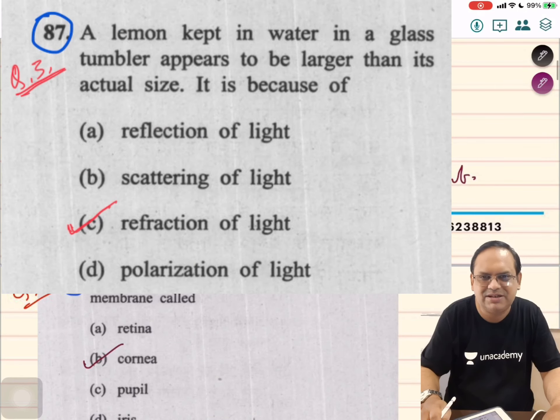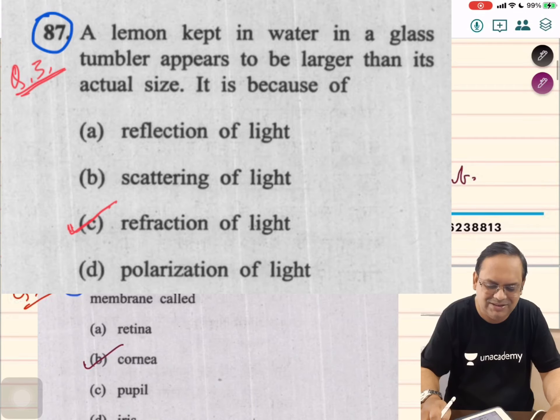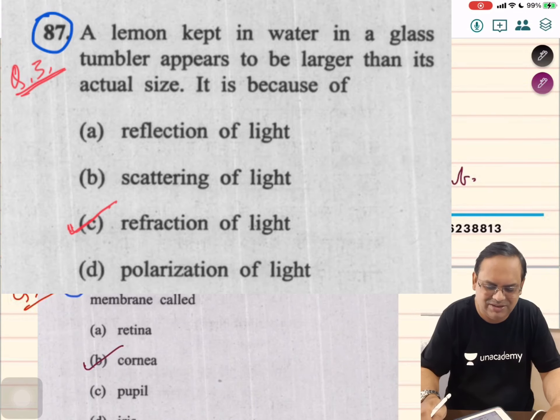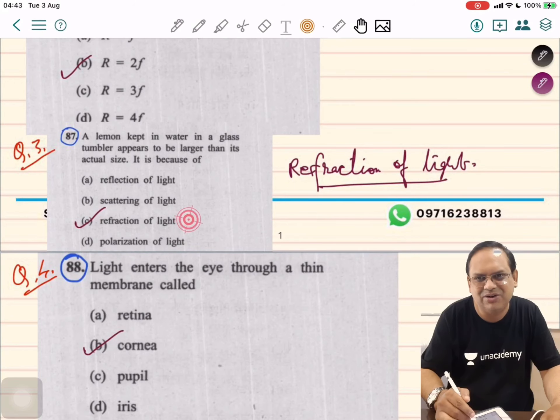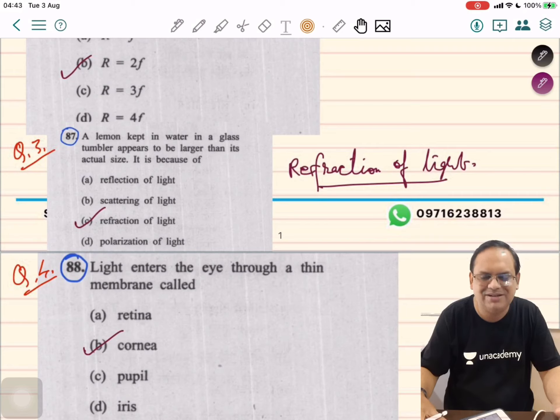A lemon kept in water in a glass tumbler appears to be larger than its actual size. It is because of refraction of light. To recall refraction: apparent depth and real depth. It is not because of reflection of light, scattering of light, or polarization. Refraction is the situation with real depth and apparent depth, and polarization is related to wave optics which is not relevant here.